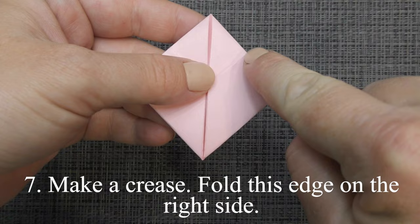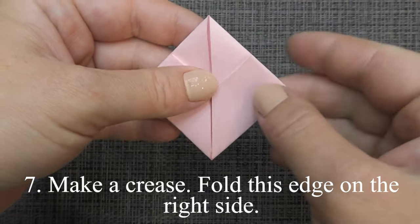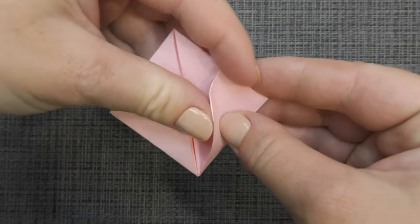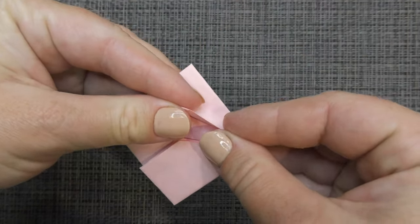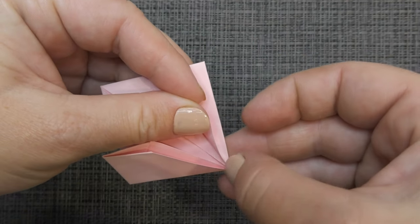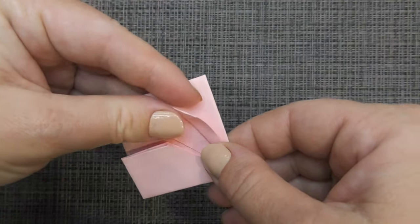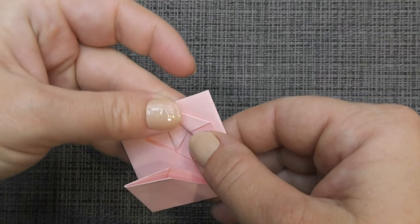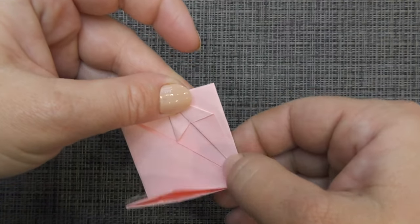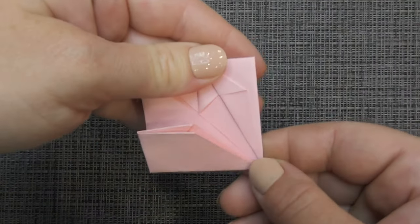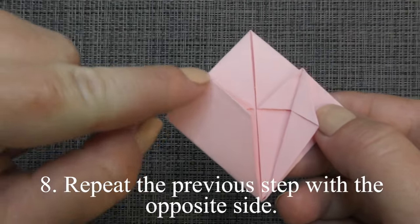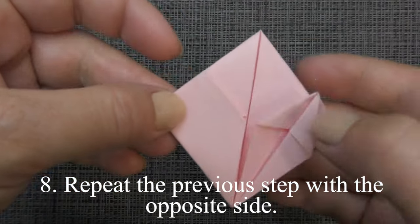Make a crease. Fold this edge on the right side. Repeat the previous step with the opposite side.